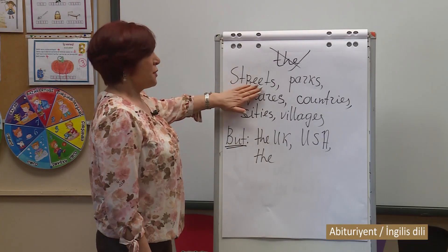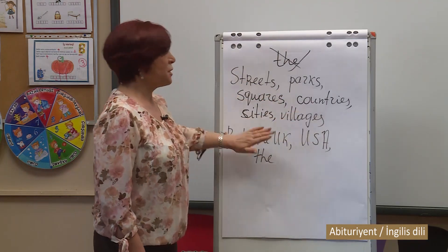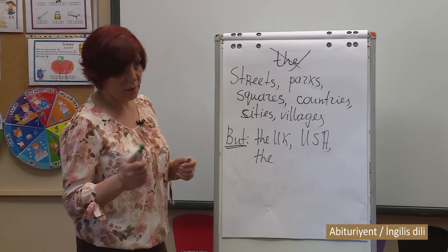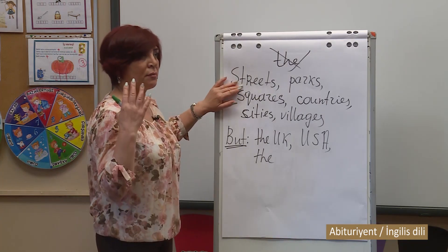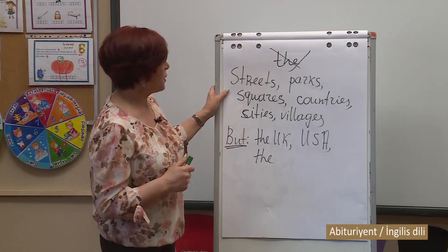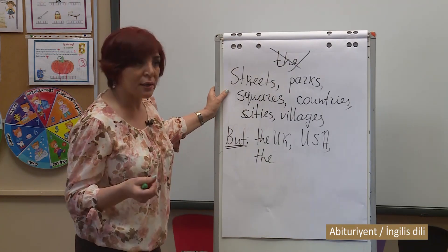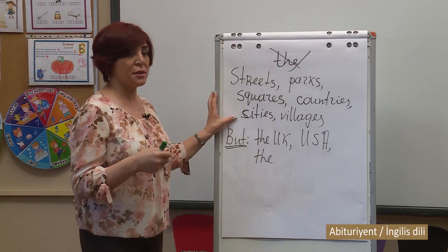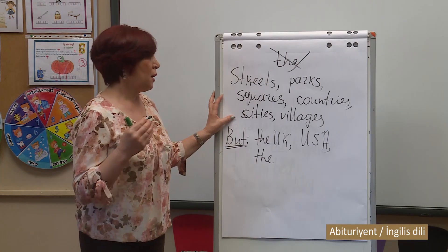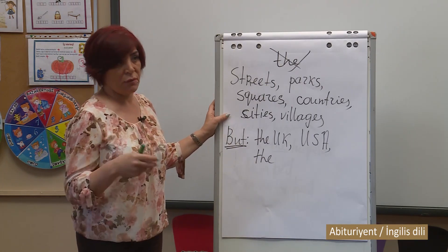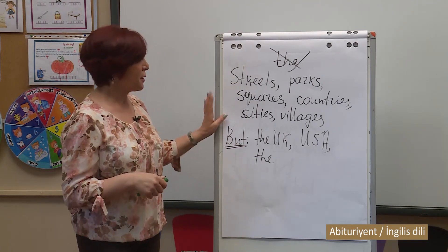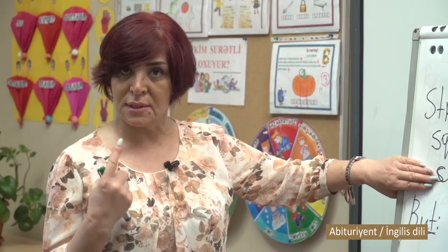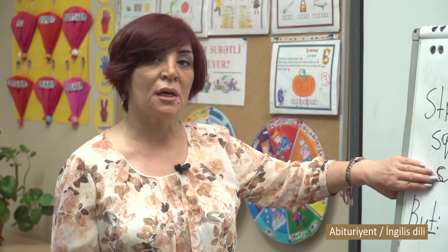We don't use an article with the names of streets, parks, squares, countries, cities, and villages. For example: 'Hyde Park' — the famous park in London — 'Nizami Street,' 'Uzeer Hajabeli Street,' 'Trafalgar Square.' Countries: Azerbaijan, Russia, England, France, Italy. Cities: Baku, Moscow, London, New York. With the names of villages, no article is used. There is one exception among cities — 'the Hague' is the only city name used with the definite article.